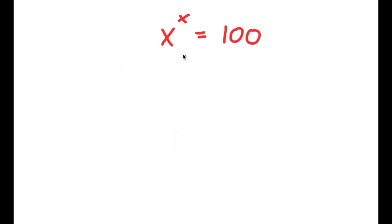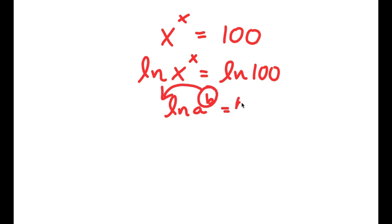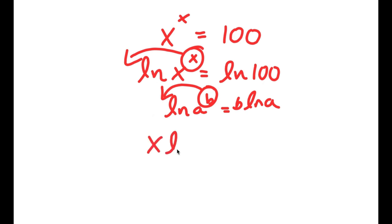In this problem, I have x to the power of x is equal to 100. I'm going to take the natural log on both sides: ln(x to the power of x) is equal to ln 100. Using the log power rule, I can move x to the front, giving me x times ln x is equal to ln 100.